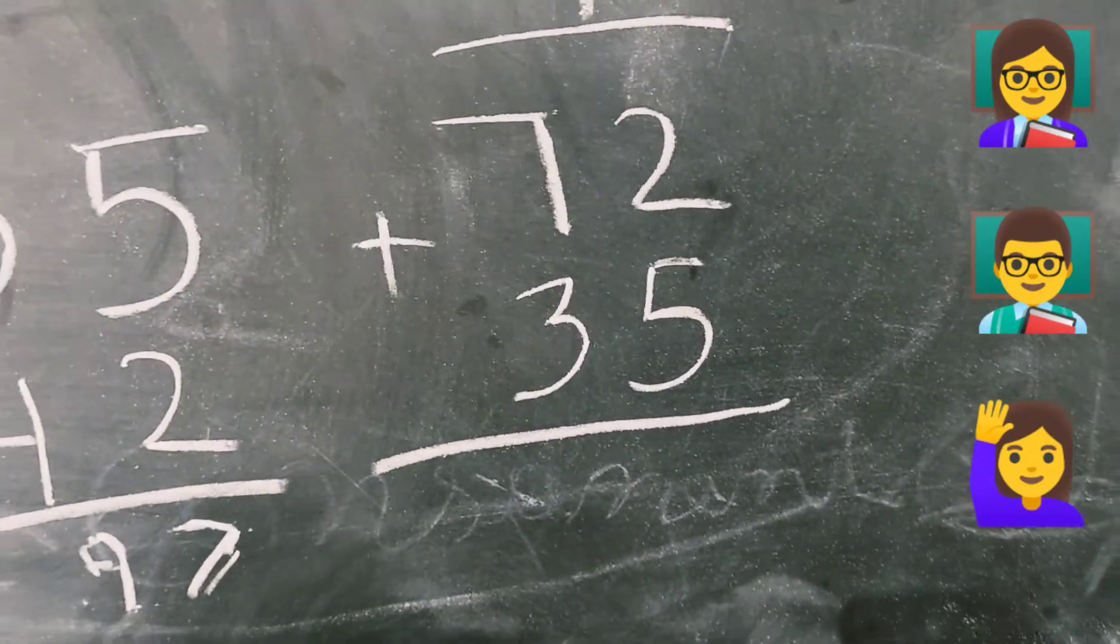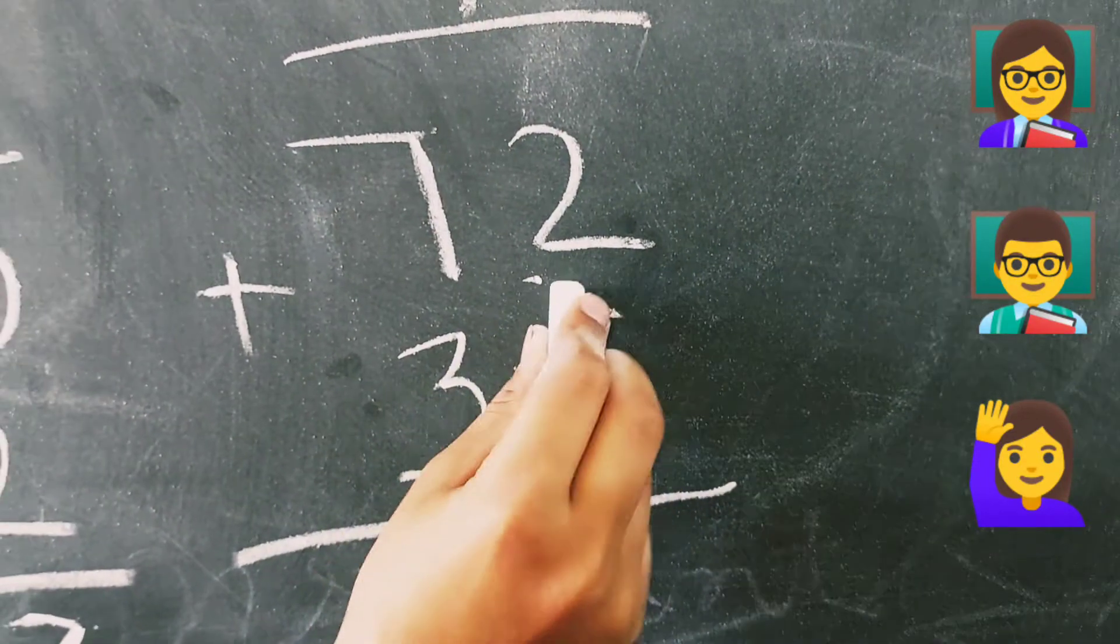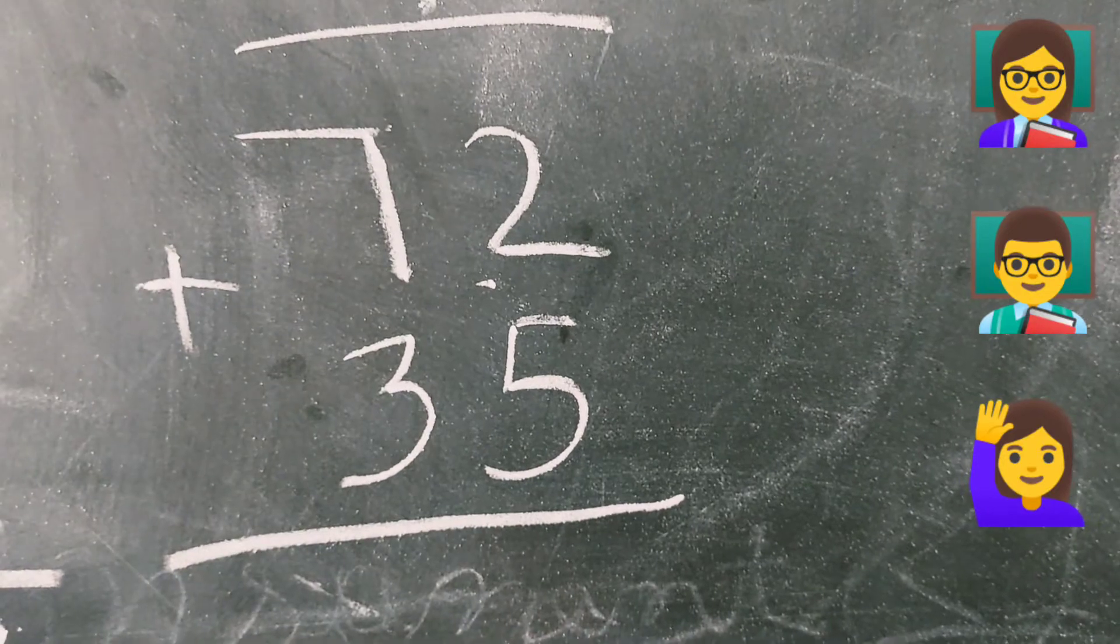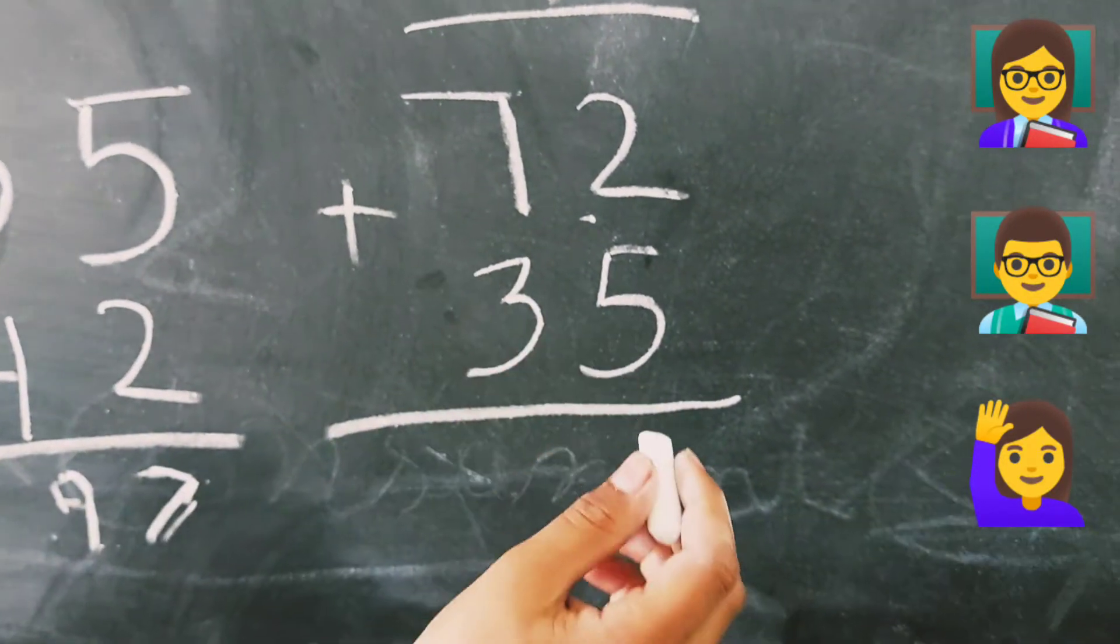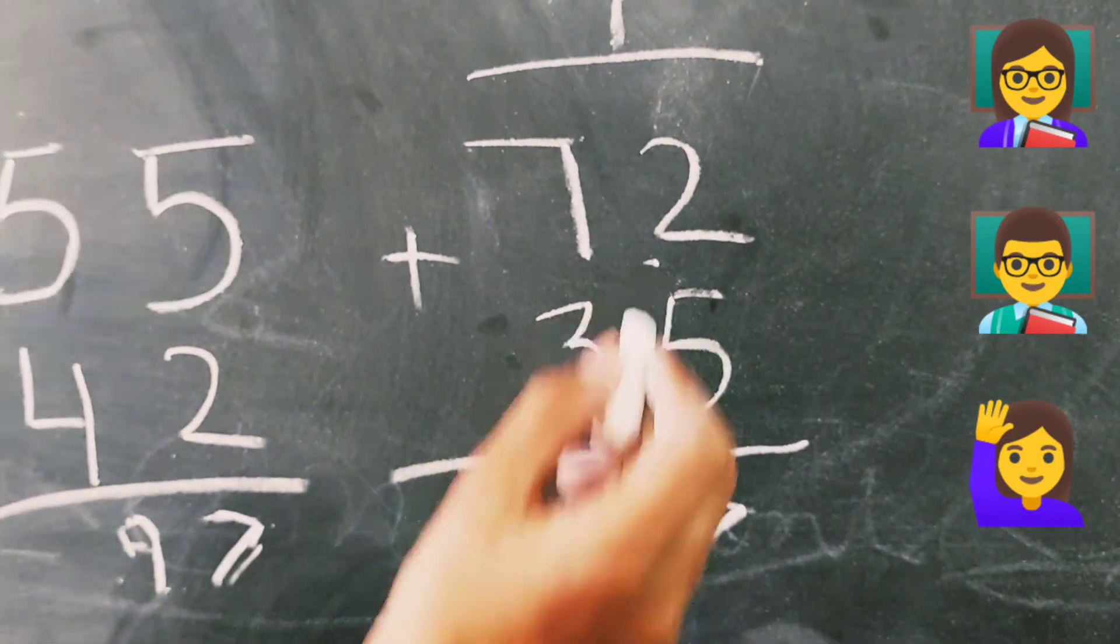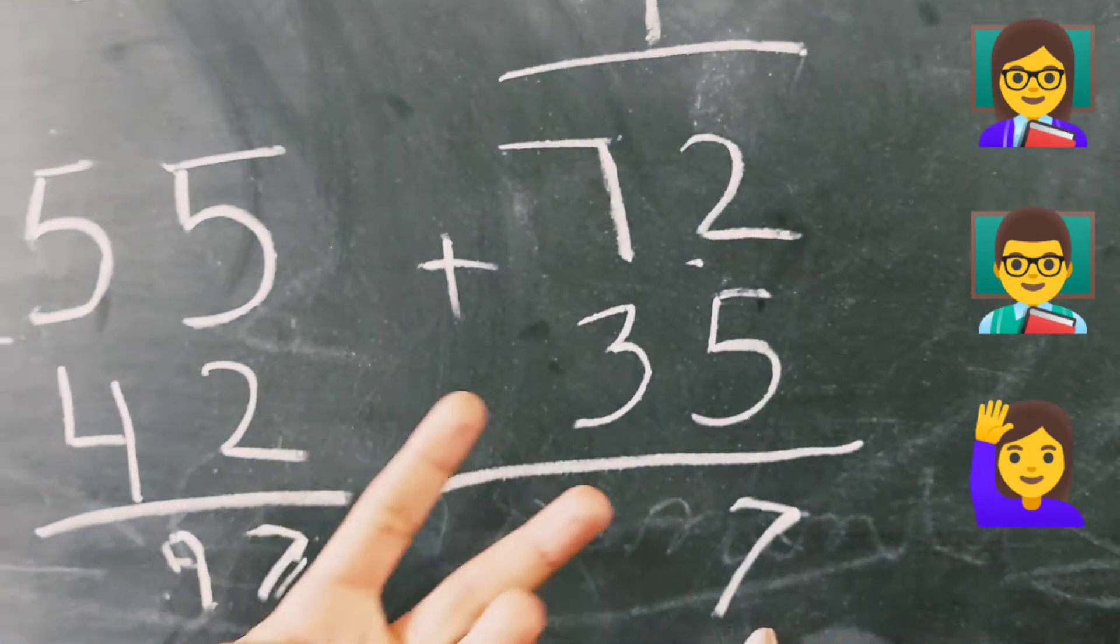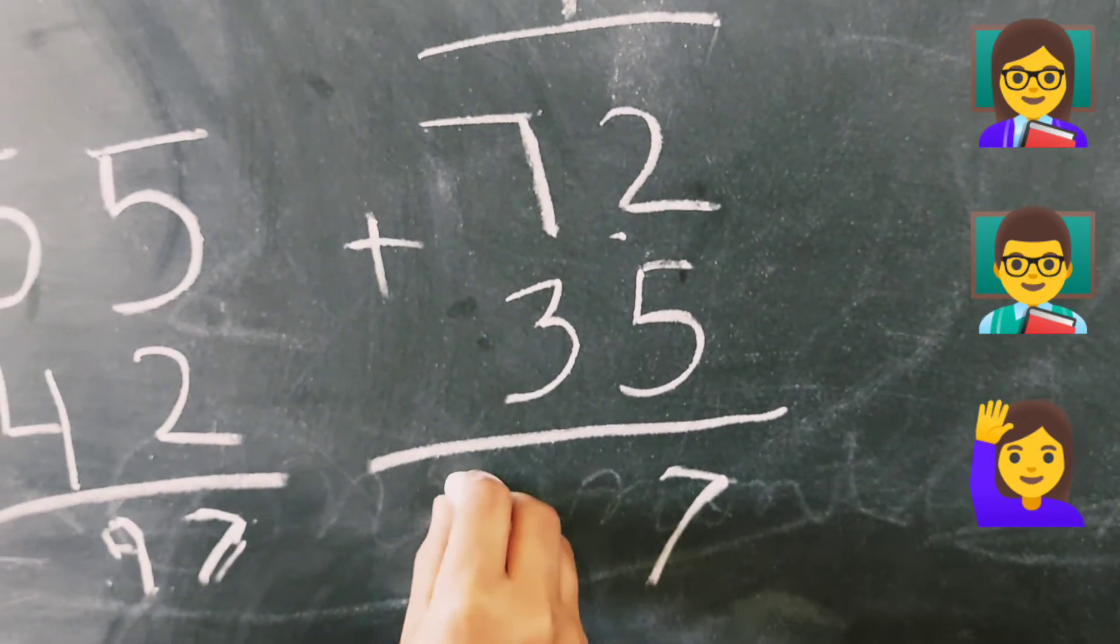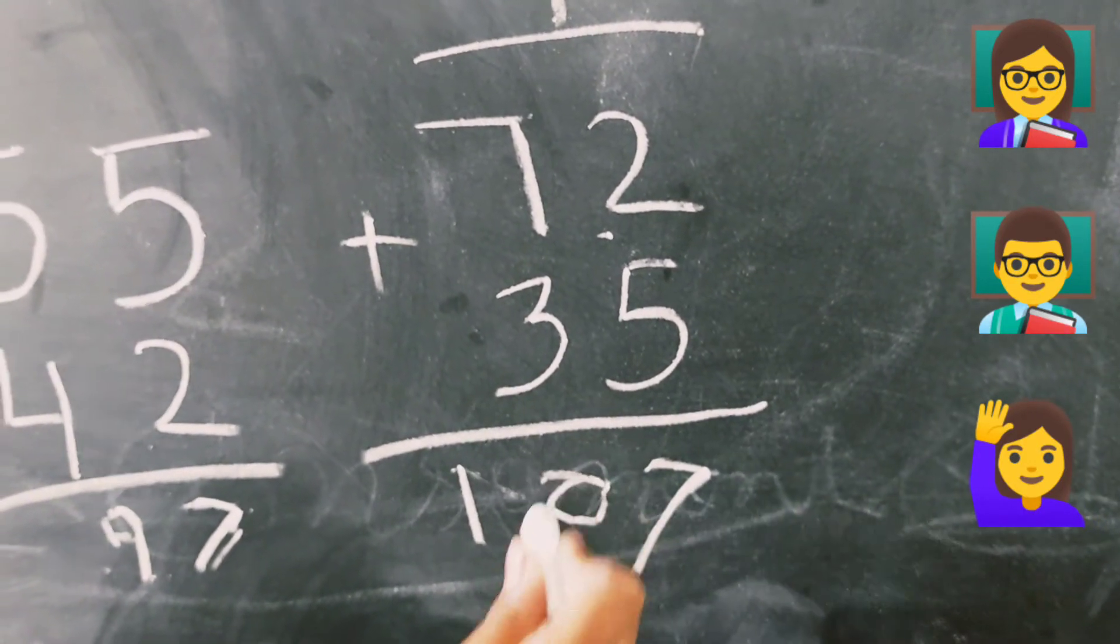Next. In doonho mein se abhi oopar kya hai? Two hai. Or two smaller hai, or five big hai. Toh, hum mind me kaun sa number rakhengay. Five. Five in your mind and two on your finger. Six, seven. Seven. So, answer is seven. Or seven in your mind, three on your finger. Eight, nine, ten. Yes. So, answer is one hundred and seven. Seven.